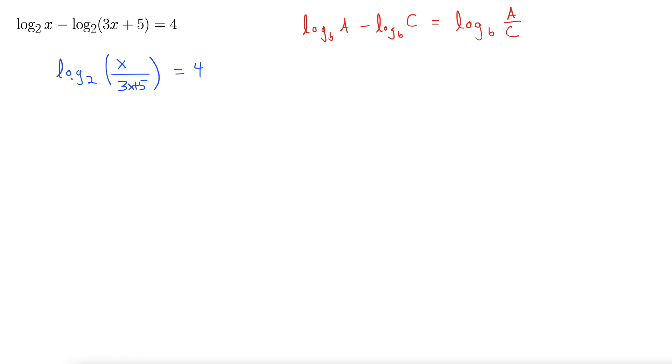Another way to think of this is you just convert it using the old standard method. You take 2, you take your base, raised to the power of 4, and then back inside for the equals. So equals x over 3x plus 5. That's the way I usually do it, but either one of those ways works fine.